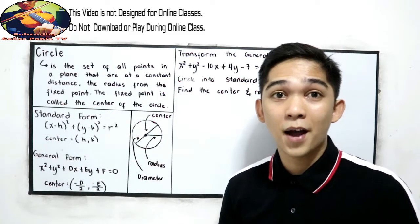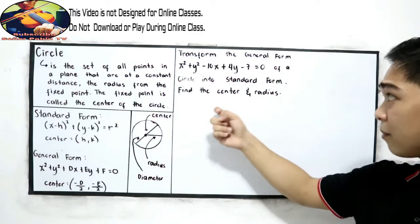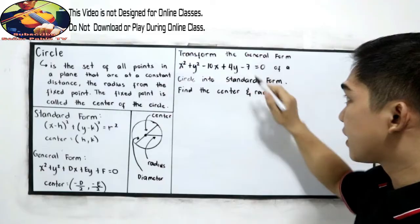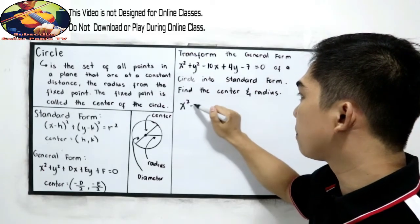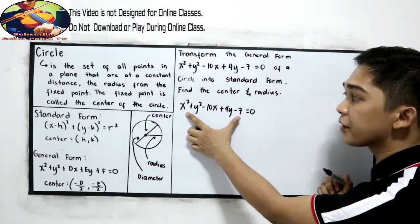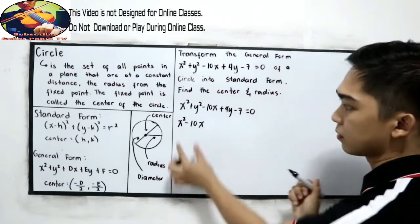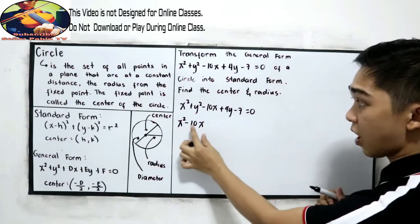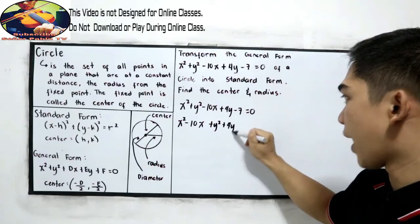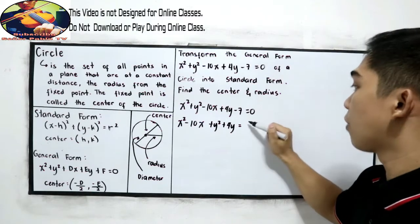We can transform by using completing the square — your lesson from grade 9. So the first step is to rearrange our given. The given is x squared plus y squared minus 10x plus 4y minus 7 equals 0. Rearrange: x squared minus 10x plus y squared plus 4y equals positive 7 (transposing the constant).